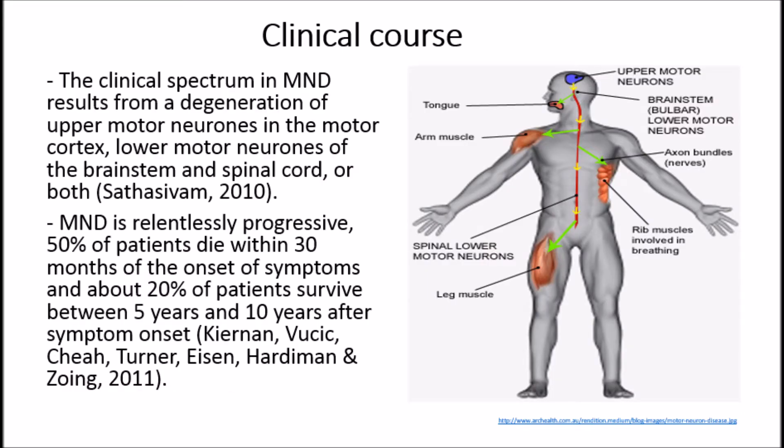The clinical spectrum in MND results from a degeneration of upper motor neurons in the motor cortex, lower motor neurons of the brainstem and spinal cord, or both. MND is relentlessly progressive — 50% of patients die within 30 months of the onset of symptoms and about 20% of patients survive between 5 and 10 years after symptom onset.